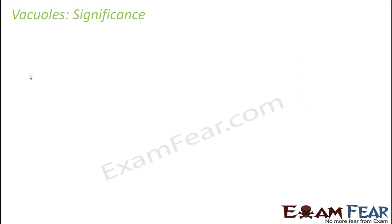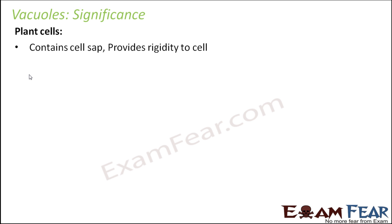The significance of vacuoles: in plant cells they contain cell sap and also provide rigidity to the cell. Providing structural support is very important in plant cells. When a plant is very young and small, everything - the stem, the root, the leaves - is so tender, soft, and delicate. As the plant grows it needs structures that can support it and provide rigidity.